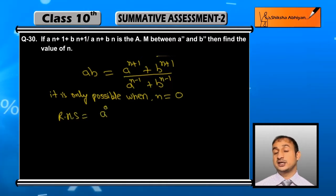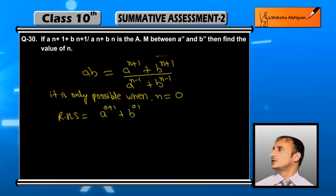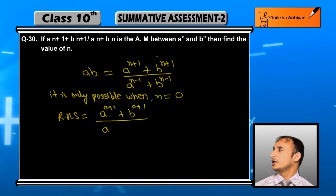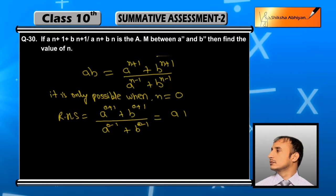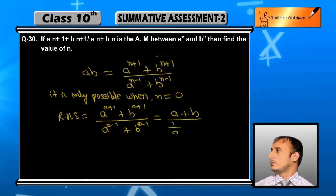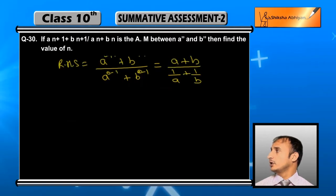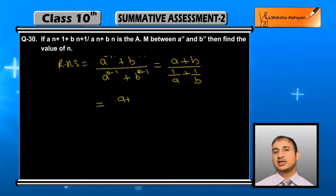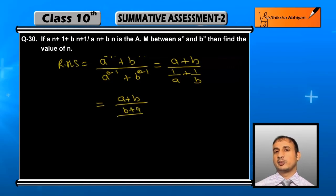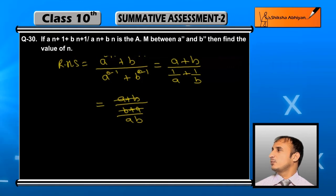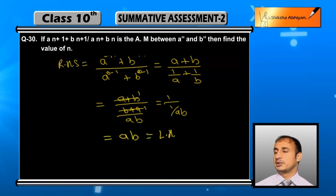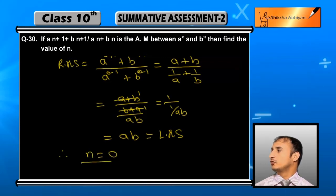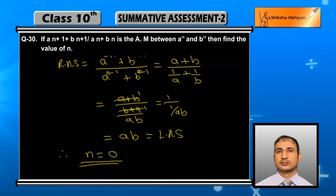Looking at the right-hand side, when we put n = 0: (a^(0+1) + b^(0+1)) / (a^(0-1) + b^(0-1)) = (a + b) / (1/a + 1/b) = (a + b) / ((a + b) / ab). The (a + b) cancels out, giving ab. So this equals ab. Therefore n = 0.